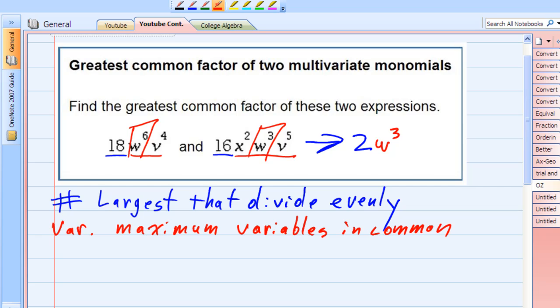And what else do they have in common? It looks like some V's. They have some V's in common. The maximum number of V's that they have in common is four.